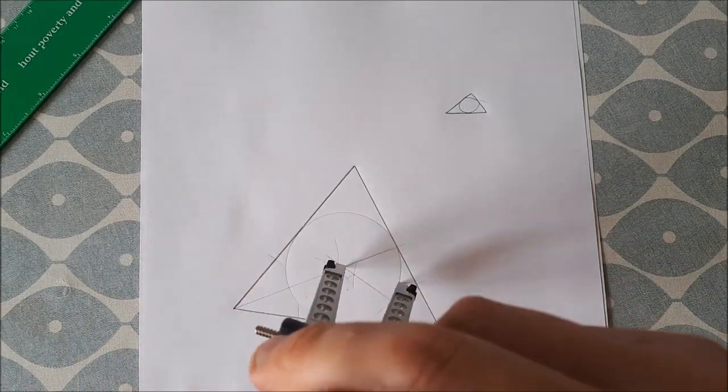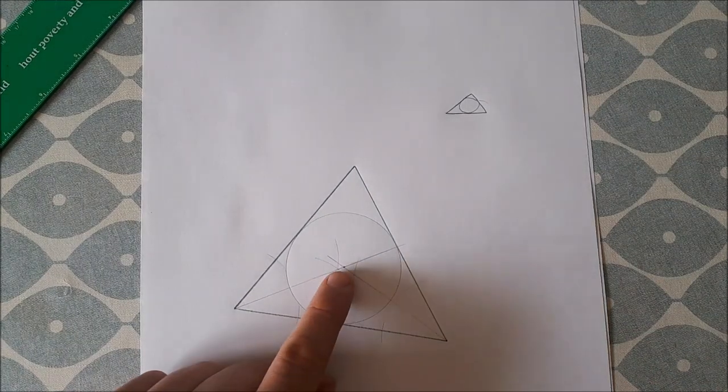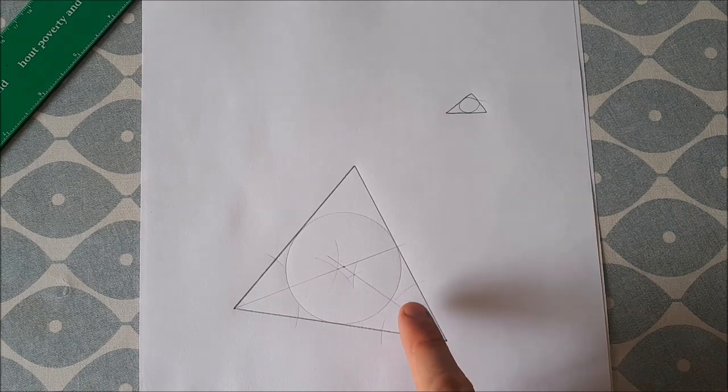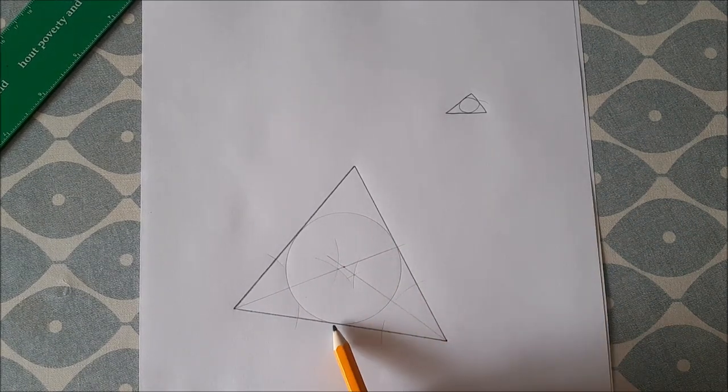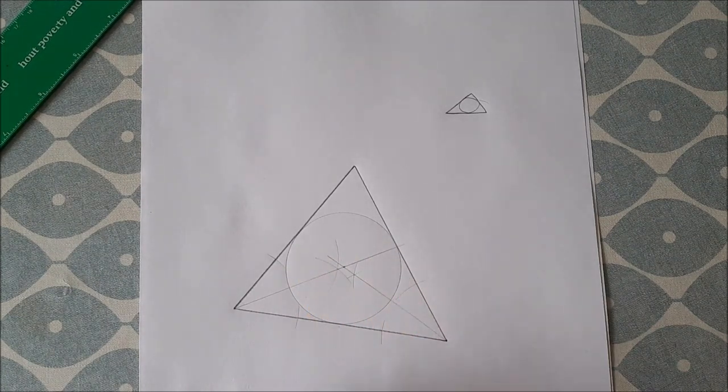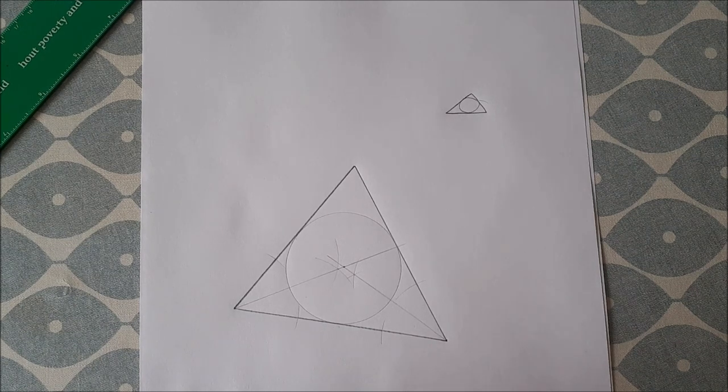So that circle there is our incircle, and this is our incenter. The incenter is the center of the circle, and the sides of the triangle are tangents to the circle. If you have any questions, just ask them in the comments below. Thanks for watching, and I'll see you in the next video.